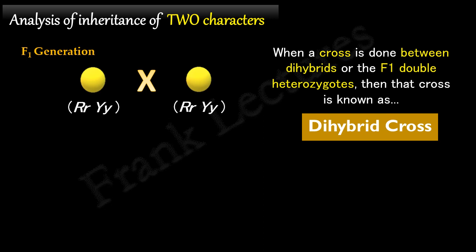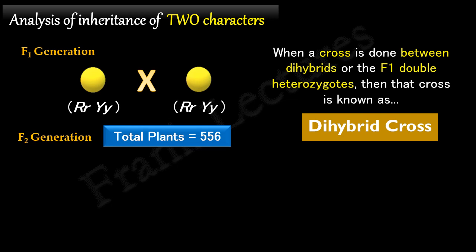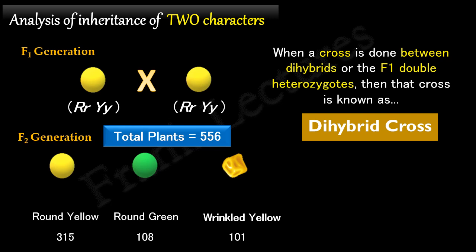So what were the results of this cross? Mendel obtained total 556 plants in the F2 generation. Out of these, 315 were plants with round yellow seeds, 108 plants with round green seeds, 101 plants with wrinkled yellow seeds, and 32 plants with wrinkled green seeds.